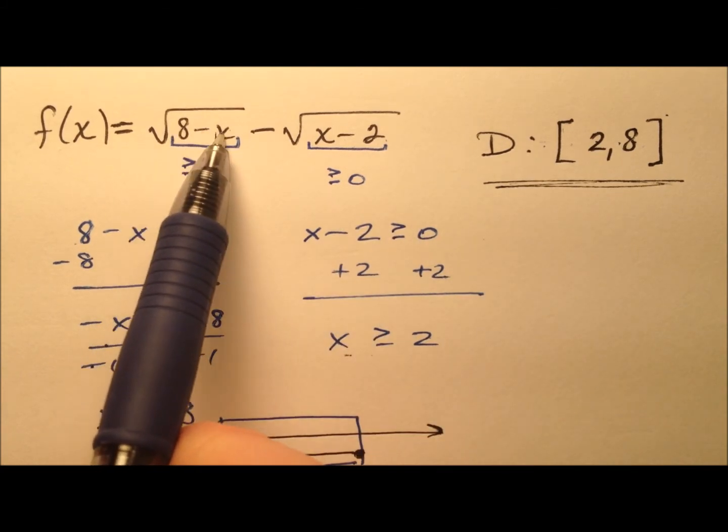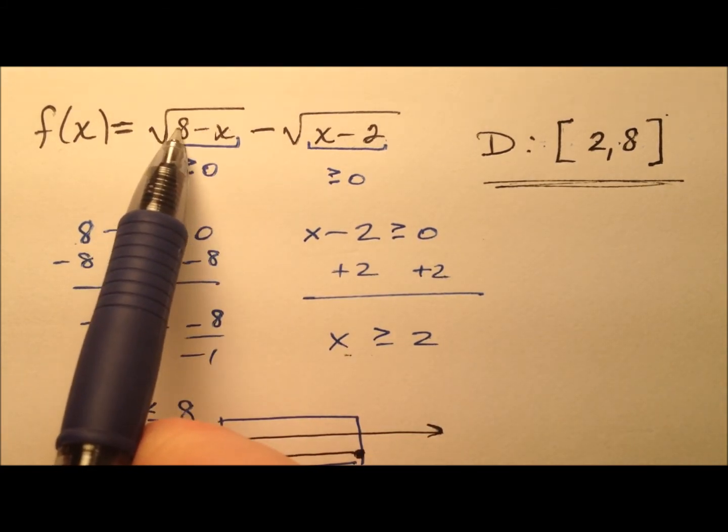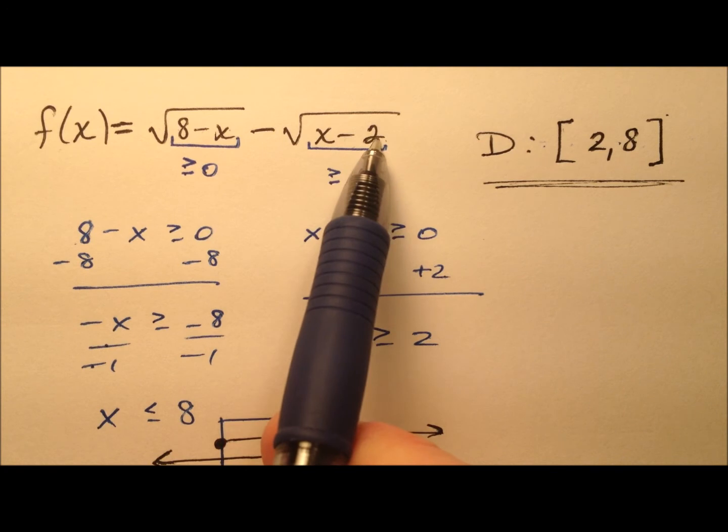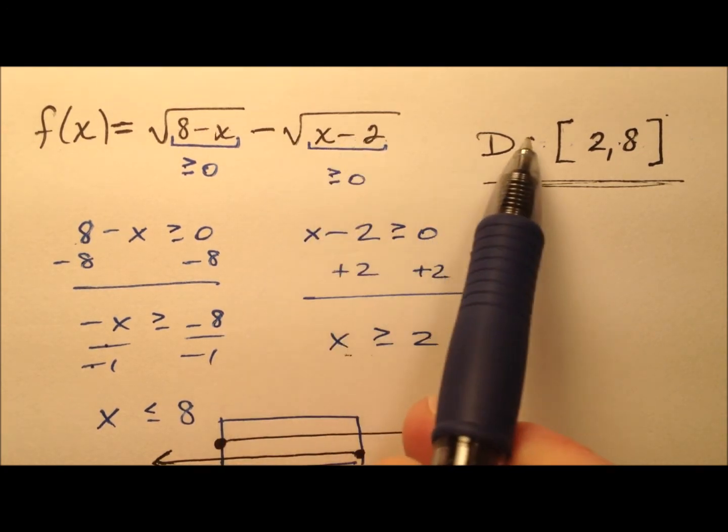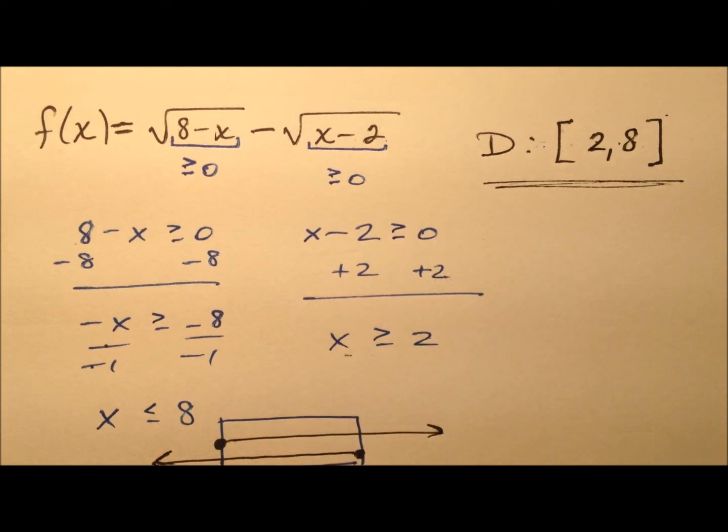So let's try 0 first. So 8 minus 0, so that's the square root of 8. That's okay. 0 minus 2 is negative 2. Yeah, I can't have the square root of a negative. So 0 does not work, which we excluded it. So good.